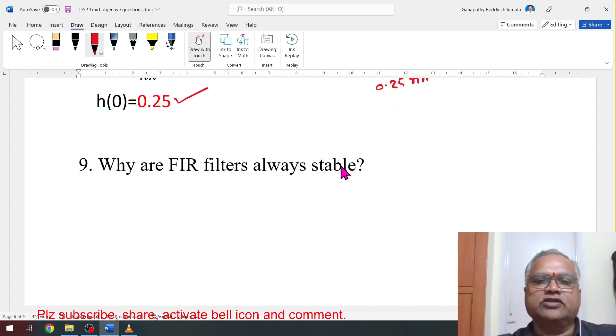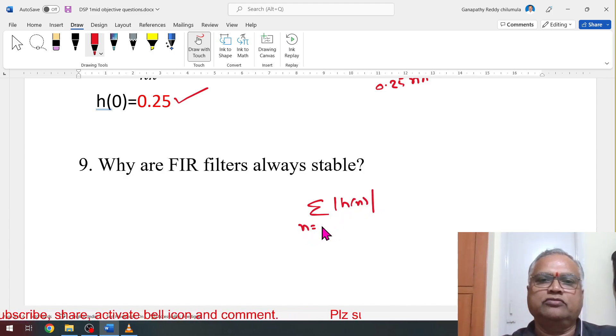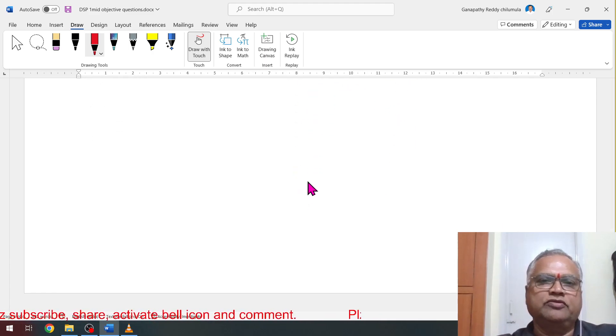Why FIR filters always stable? FIR means finite duration. What is the condition for stability? Summation mod h(n), n equal to minus infinity to infinity, it should be finite. Because it is finite, summation is always finite. Therefore, FIR filter always stable. These are some of the sample questions.